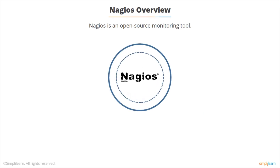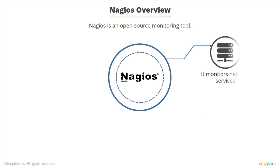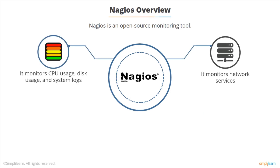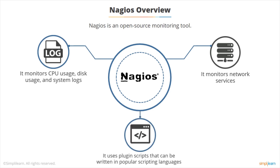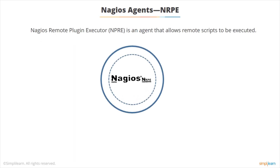The first tool is Nagios, which is an open source monitoring tool. It looks at network services and can monitor things like CPU usage and other resources like disks, and also looks at log files. It has scripts which are plugged into it and can be written in any popular scripting language — you basically write a plug-in script and it will perform a certain monitoring job.